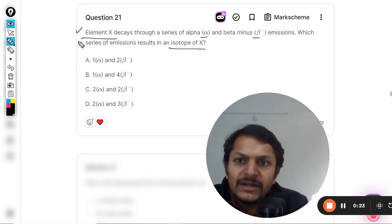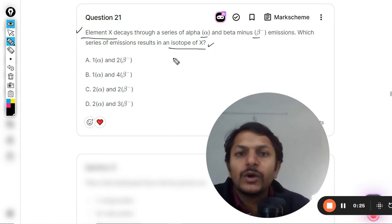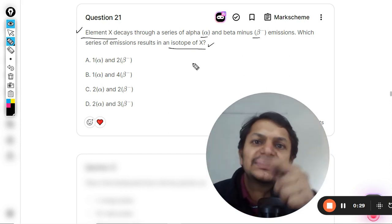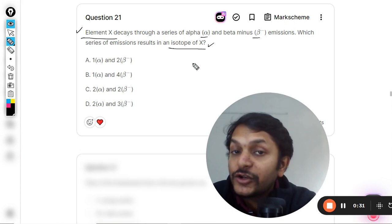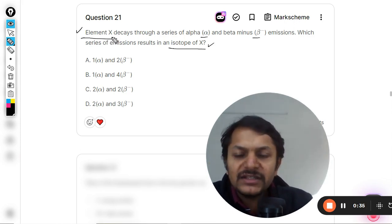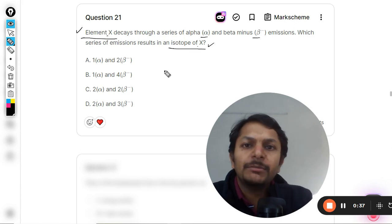So if there is an element X, you want to create an isotope. What are isotopes? Isotopes are elements having the same atomic number but different atomic mass numbers. So we don't care about the mass number now, but the atomic number should come out to be equal to each other in both cases.